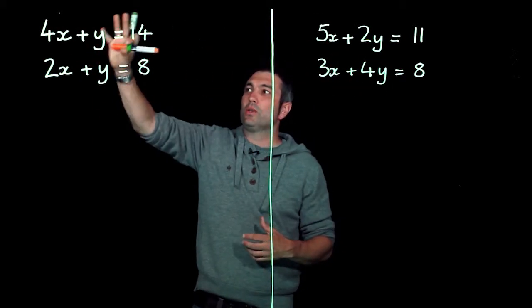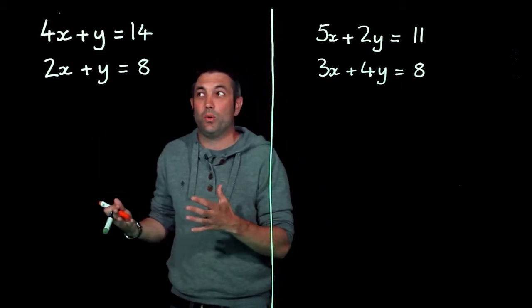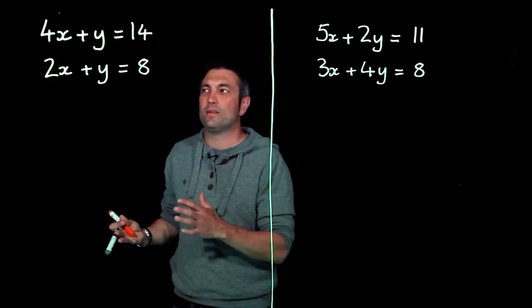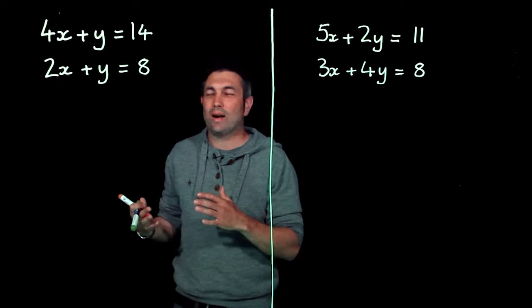We're going to look at this one first and we're going to solve these by something called elimination. Now that's a big mathy word for get rid of one of the letters, and how we're going to get rid of one of the letters is we're going to add or subtract the equations.